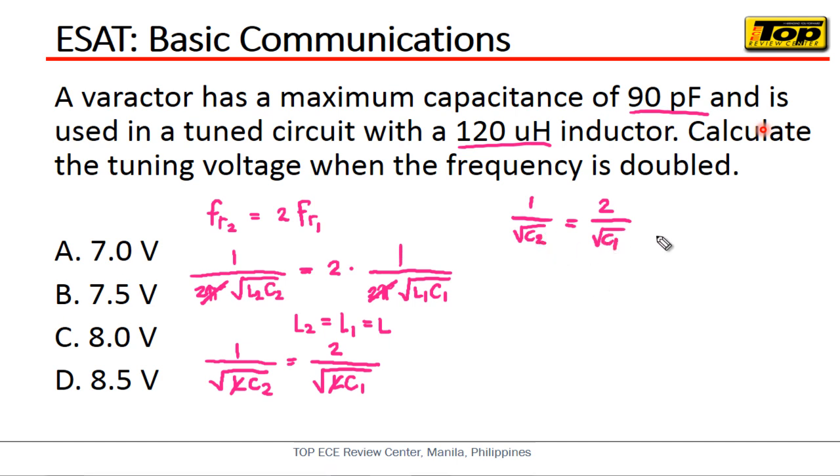And what we're solving here of course is the C2. So C2 is equal now to what? This will be equal to C1 over 4. Correct? Wherein our C1 in this case is the 90 picofarad. So what will be the value of our C2? So C2 is equal now to 90 picofarad over 4 and that is equal to 22.5 picofarad. Alright.